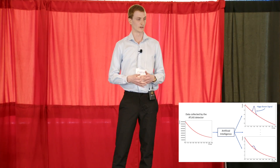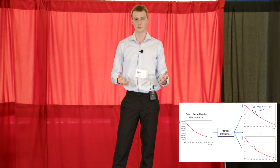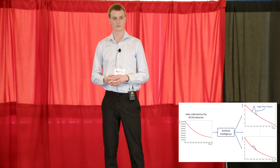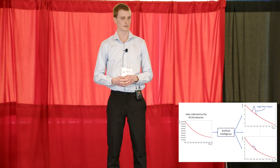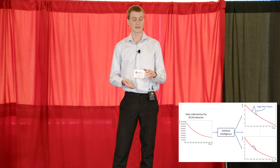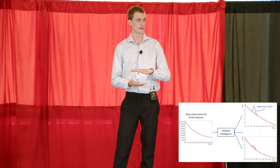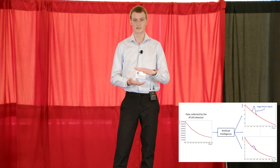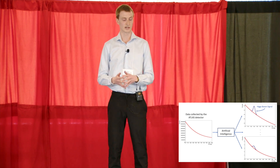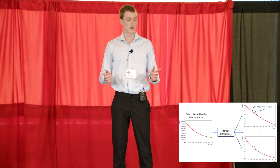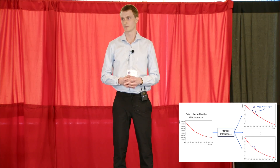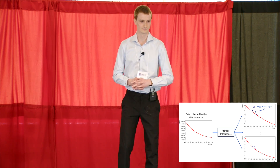If we do see this Higgs boson interacting with the muon, this would be a huge step in the world of particle physics and understanding how particles obtain mass. This would be a Higgs interaction on a much smaller scale than anything we've seen so far, which makes it extremely challenging — but with advancements in artificial intelligence, it just might be possible. Thank you.